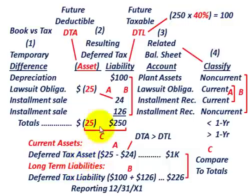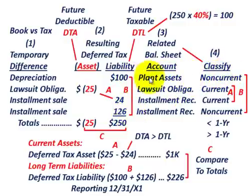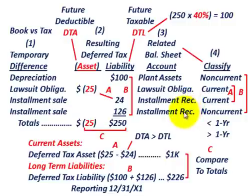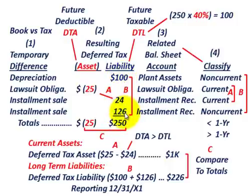For our long-term liabilities, we have the deferred tax liability for depreciation of $100,000, plus another deferred tax liability of $126,000 for the non-current portion of the installment sale. The depreciation related to plant assets is non-current, and the installment receivable portion is also non-current — everything is greater than one year. Adding those non-current amounts together: $100,000 plus $126,000 gives us a long-term deferred tax liability of $226,000.